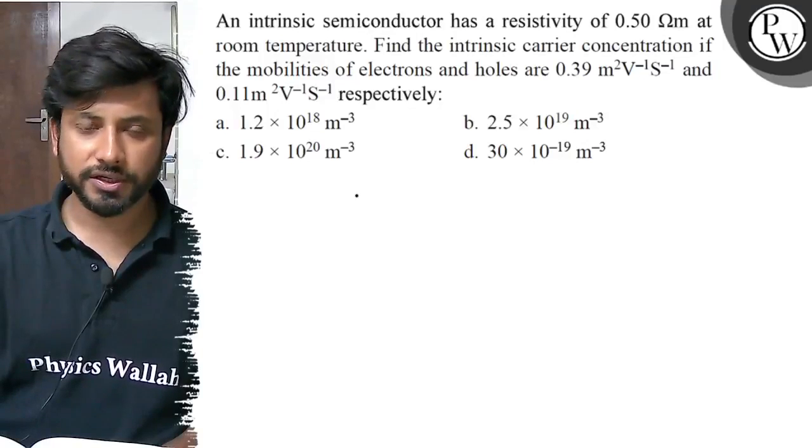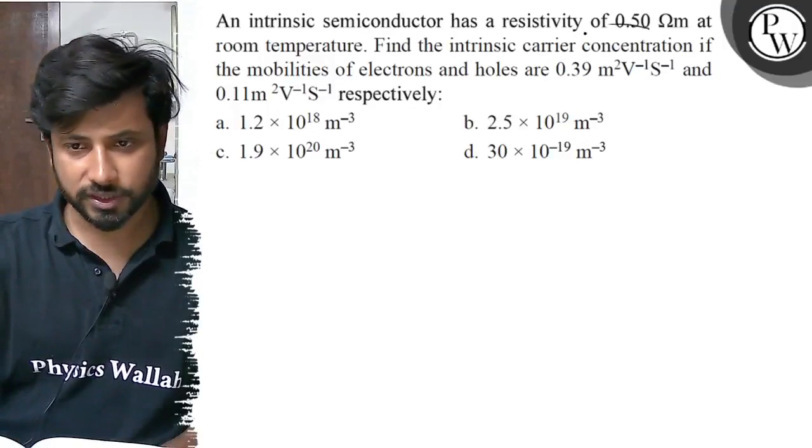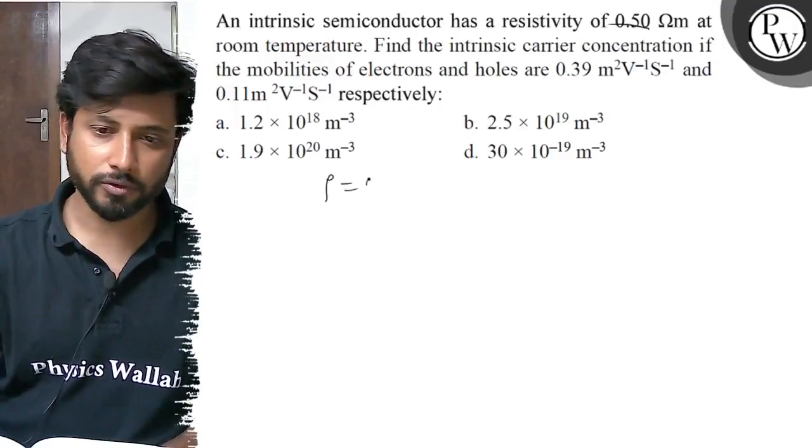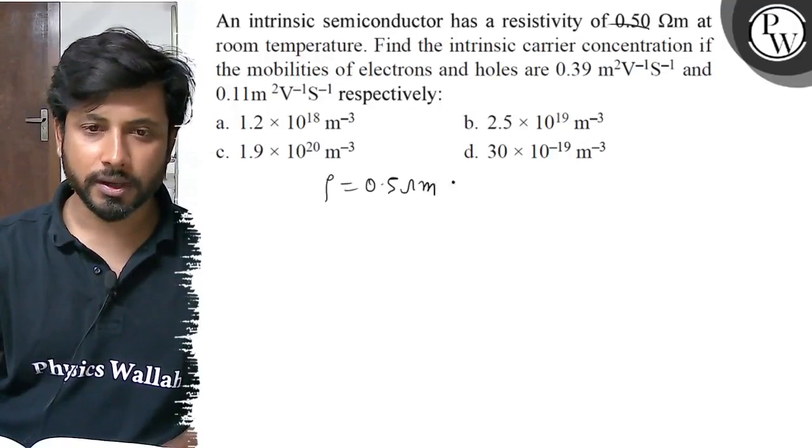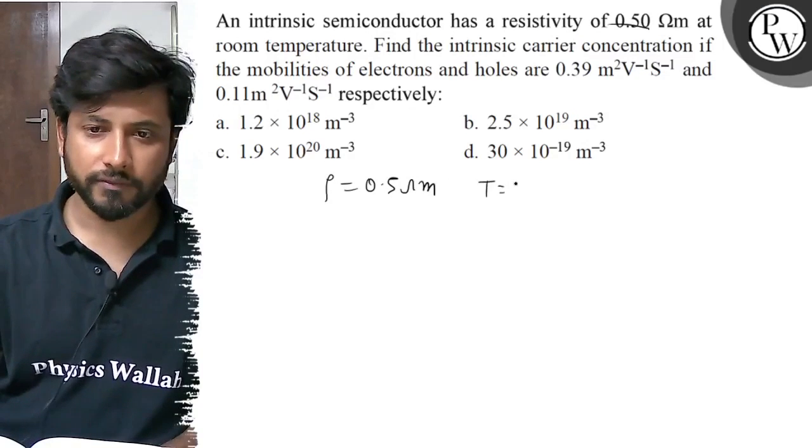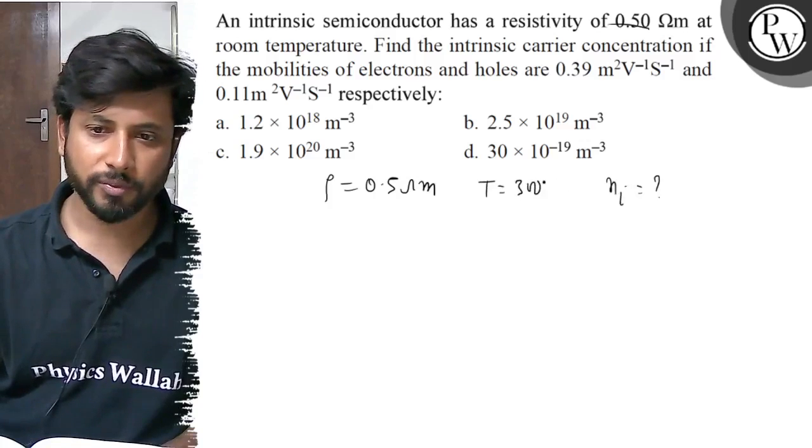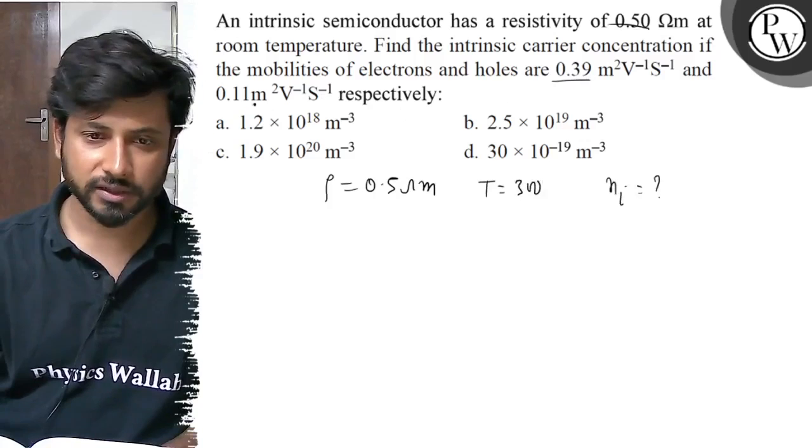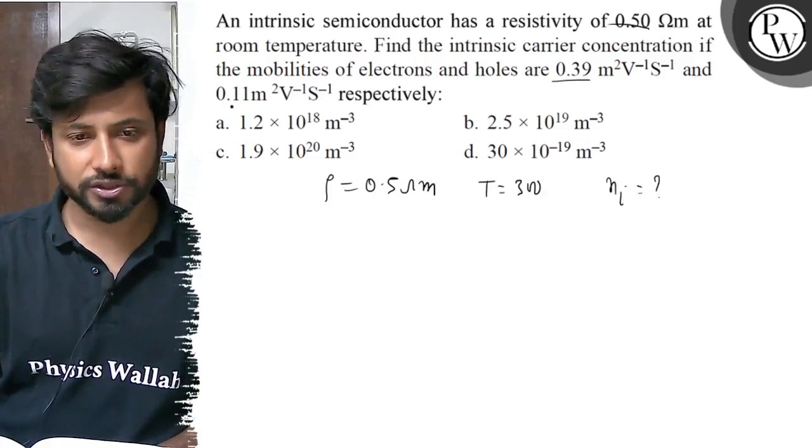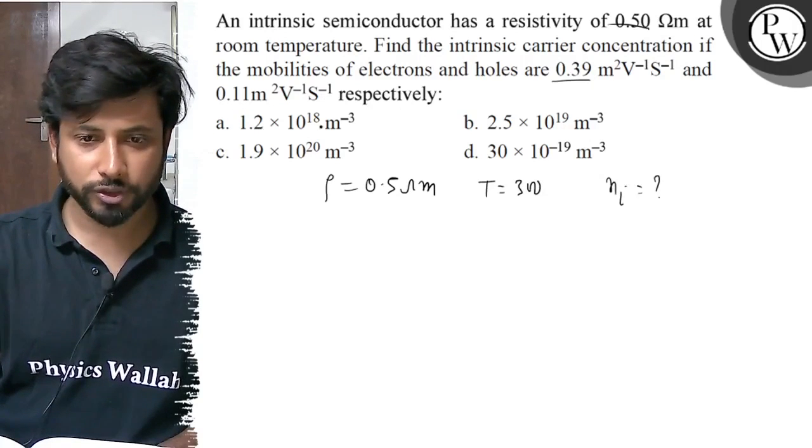Hello, let us see this question. An intrinsic semiconductor has resistivity 0.5 ohm meter at room temperature. Find the intrinsic carrier concentration if mobilities of electrons and holes are 0.39 and 0.11 m²V⁻¹s⁻¹ respectively. Option a: 1.2×10¹⁸ m⁻³.